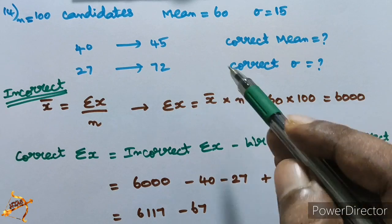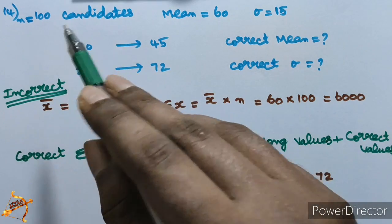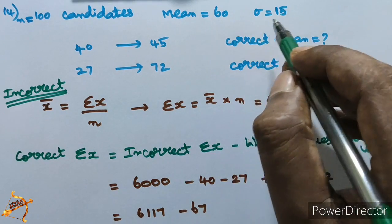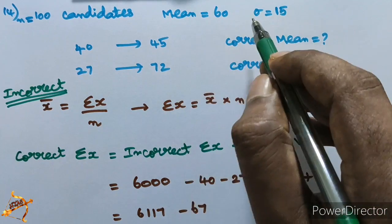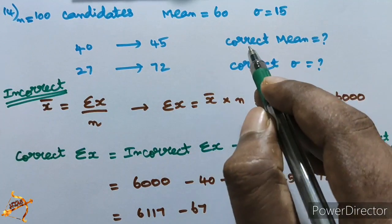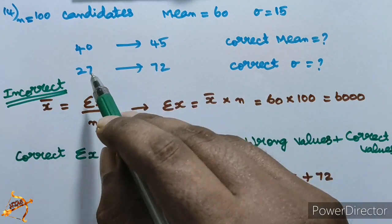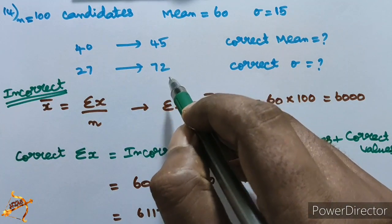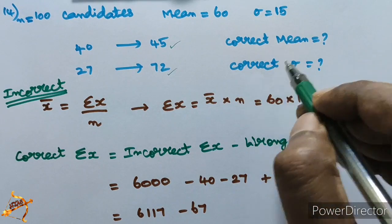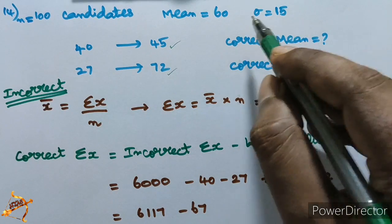The sum is very interesting. For 100 candidates, we use symbolization of the total value. Mean is 60 and sigma is 15. For the total value, the incorrect summation includes wrong values: 40 and 27. The correct value will give us the correct mean. Correct mean and sigma — mean is 60, sigma is 15.